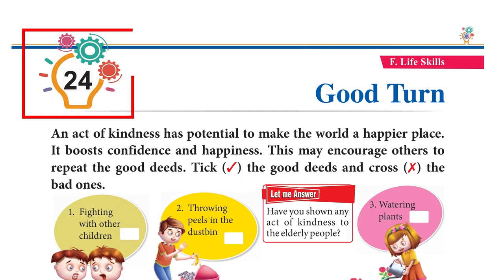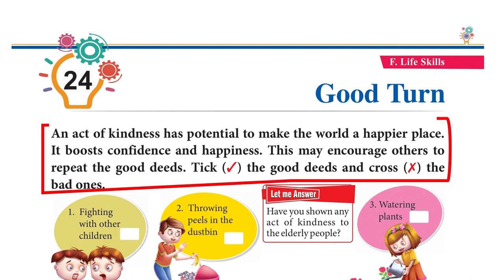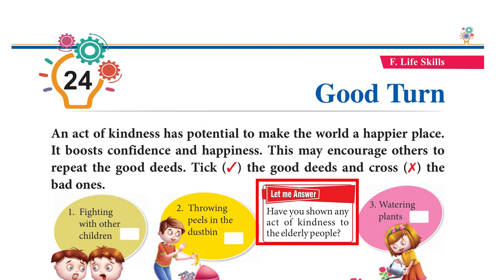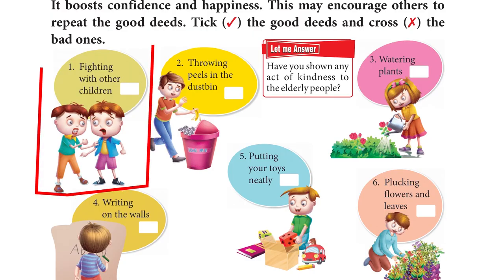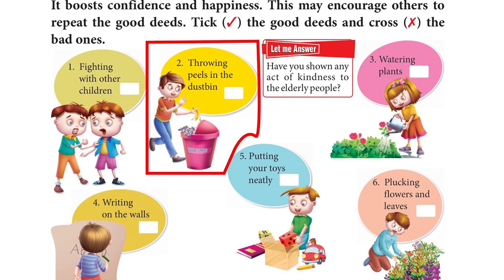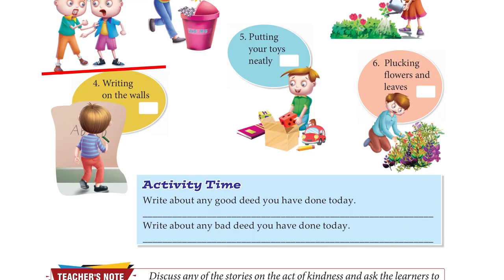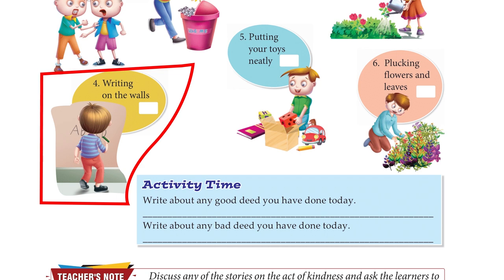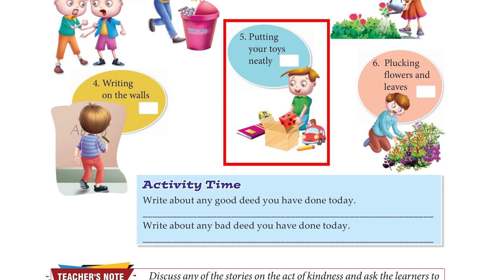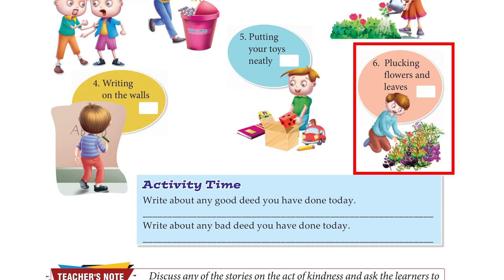Chapter 24: Good Turn. An act of kindness has the potential to make the world a happier place. It boosts confidence and happiness and may encourage others to repeat good deeds. Take the good deeds and cross the bad ones: fighting with other children — cross; throwing peels in the dustbin — tick; watering plants — tick; writing on walls — cross; putting your toys neatly — tick; plucking flowers and leaves — cross.